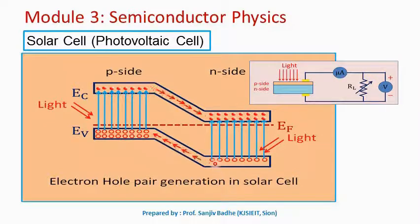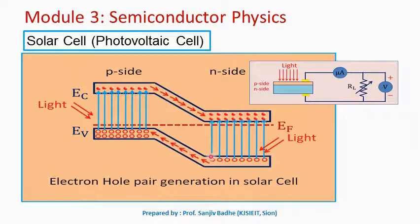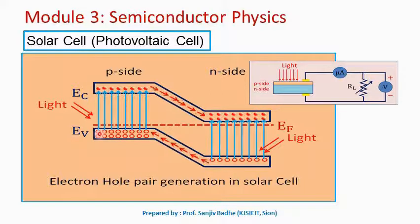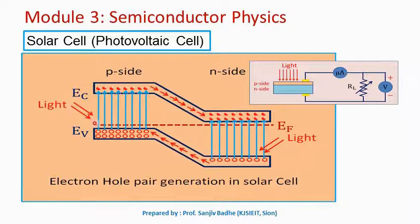Similarly, light energy is utilized by electrons in the valence band on the n-side, and these electrons also make a transition to the conduction band, leaving behind holes in the valence band. When an electron absorbs energy and transitions from the valence band to the conduction band, we get one electron in the conduction band and one hole left behind — this is called electron-hole pair generation. This electron-hole pair generation is the core principle used in a solar cell.